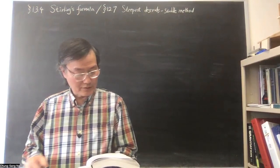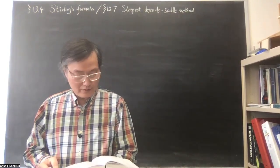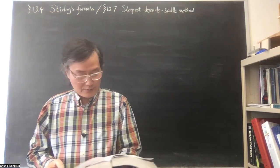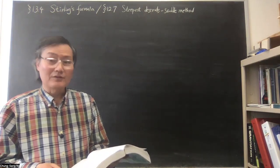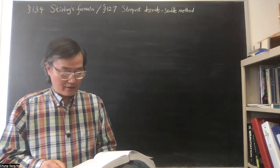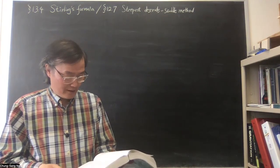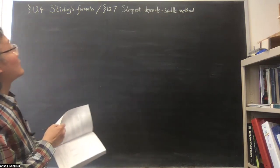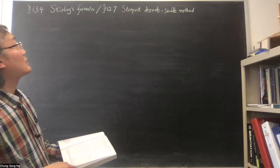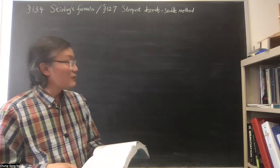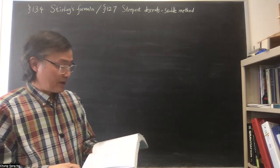We'll talk about Stirling's formula in section 13.4. The textbook derives the asymptotic series for the gamma function for large argument. It's a very nice derivation, but I'll derive it using the method presented in textbook section 12.7 — the so-called steepest descent method, also called the saddle point method.